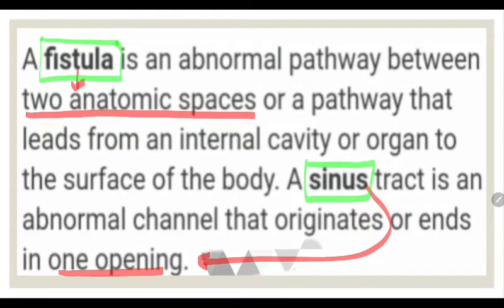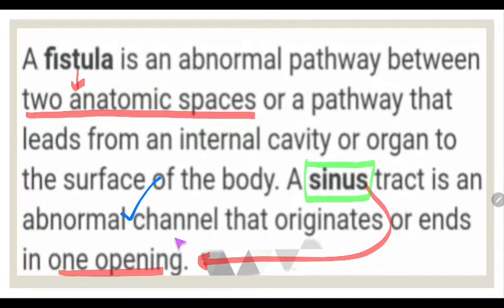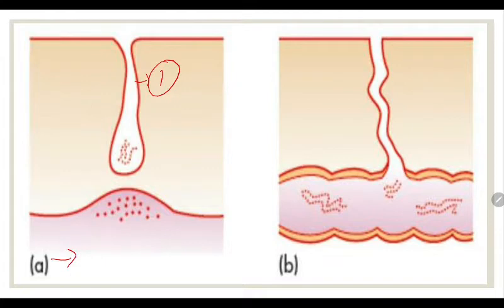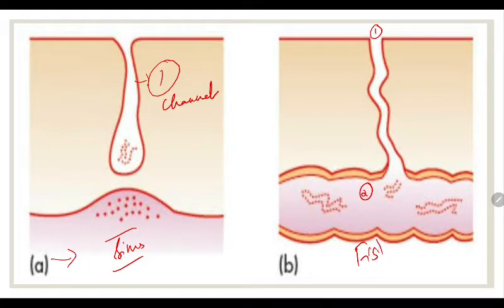Fistula, sinus, and cyst are all abnormal and pathological. A fistula is a pathway that connects two anatomical spaces. A sinus is an abnormal tract or channel that has only one opening. Looking at the picture, the one with a single channel is the sinus, and the one with communication between two anatomical spaces is the fistula.